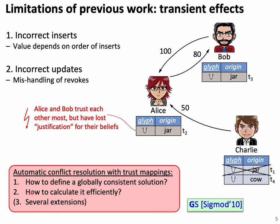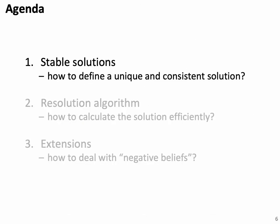The focus of this talk is: how can we define a principled semantics that avoids these problems? And furthermore, how can we calculate this in an efficient way — which is non-trivial — and how can we add extensions to negative beliefs? These three parts form the three parts of our talk.